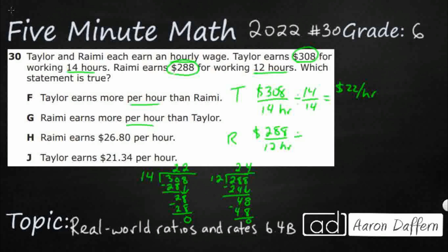If you divide this, let's see, 14 right there. No, that's 12. I was right the first time. You're going to get a little bit more. So, Ramey actually earns a little bit more, $24 an hour. Even though Ramey earned less, it's because Ramey worked less hours. If Ramey were to work the same hours as Taylor, we can infer that Ramey would actually earn more money.